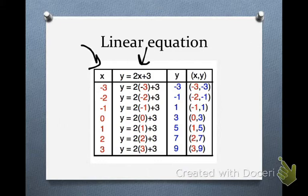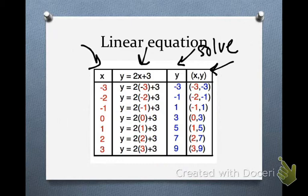In our first column, we always have an x. Second column, we always have the equation. Third column is y, and we're going to always solve for y. And then we have our x and y coordinate points.